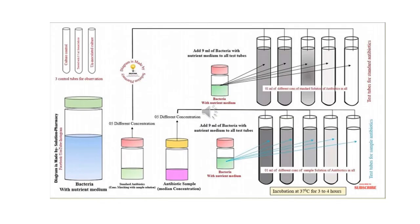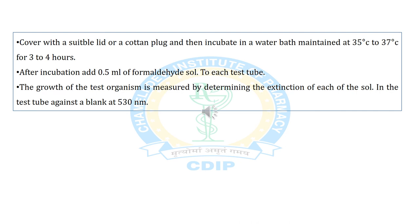This image shows the turbidimetric method — you can identify the 5 test tube set and the clearance zones where microorganisms are killed by the antibiotic sample. Transfer all materials; cover the test tubes with a suitable lid or cotton plug, then incubate in a water bath maintained at 35°C to 37°C for 3 to 4 hours. After incubation, add 0.5 ml of formaldehyde solution to each test tube. The growth of the test organism is measured by determining the extinction of each solution in the test tube against the blank at 530 nm.